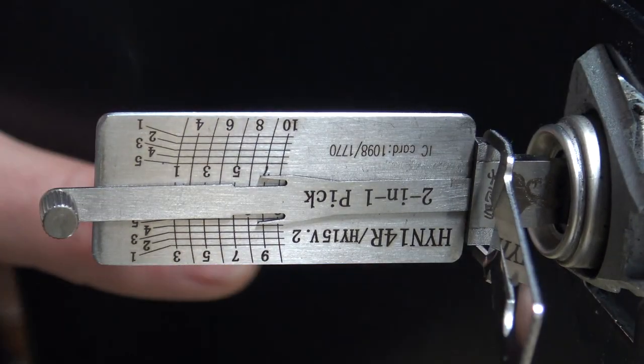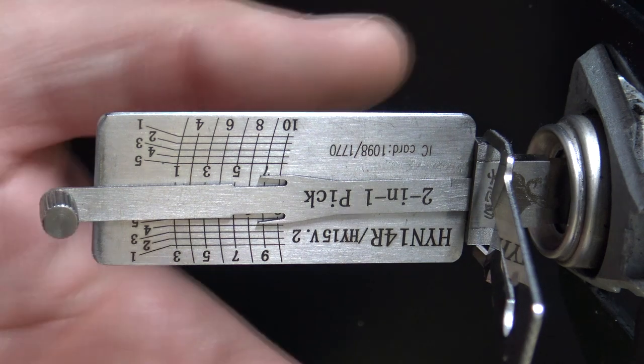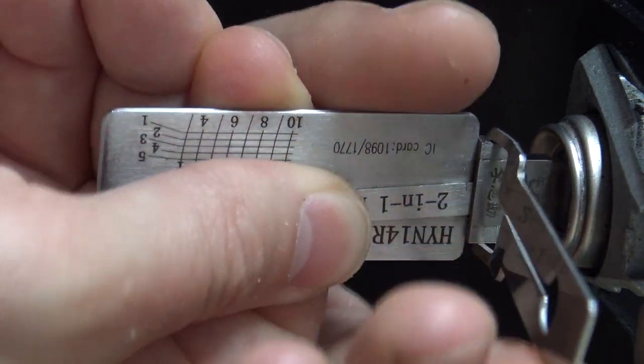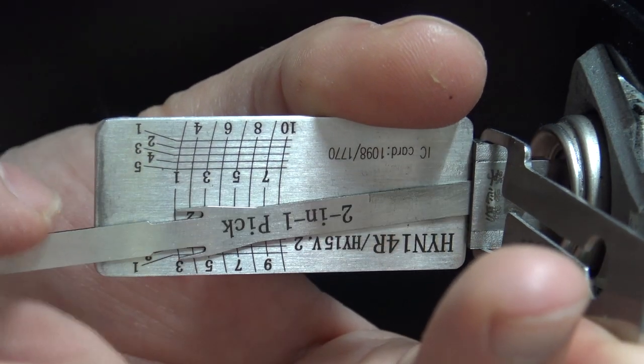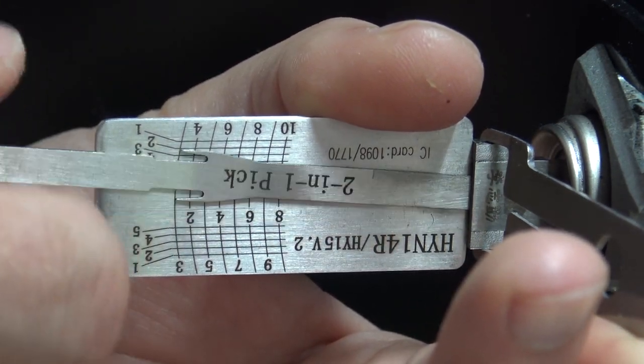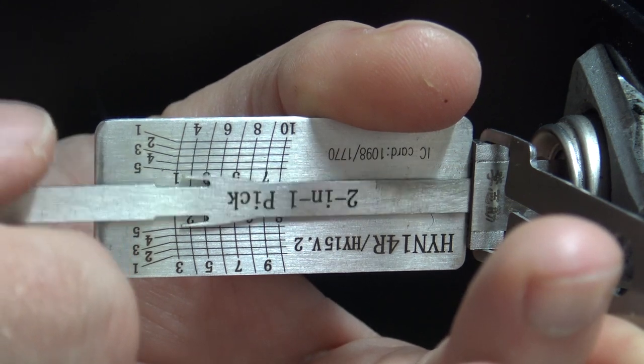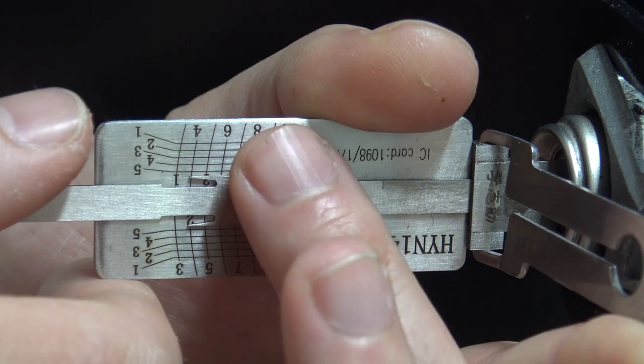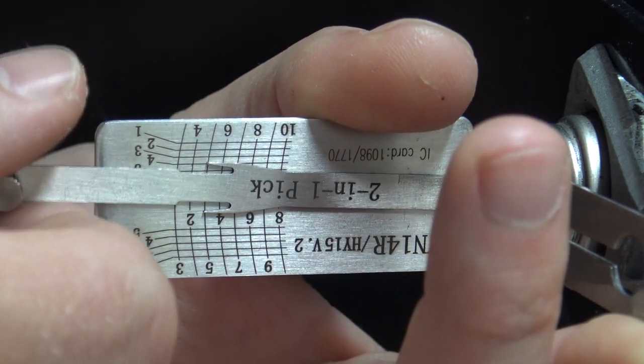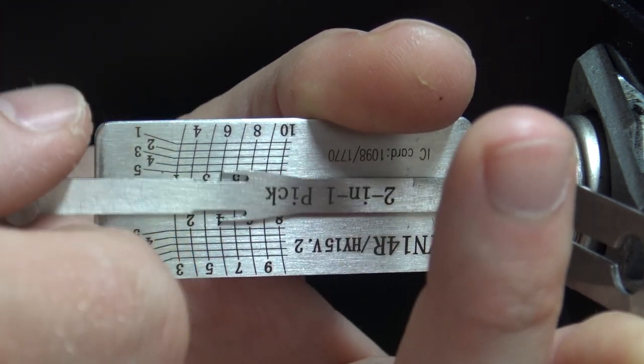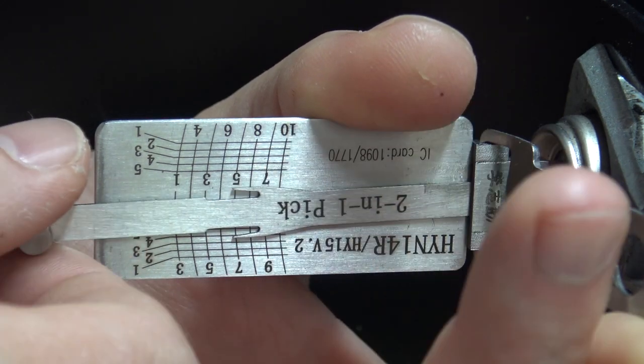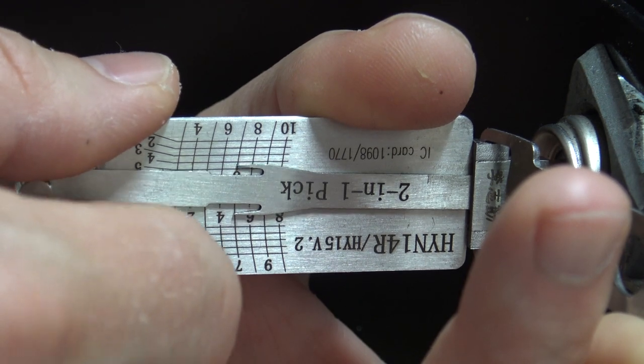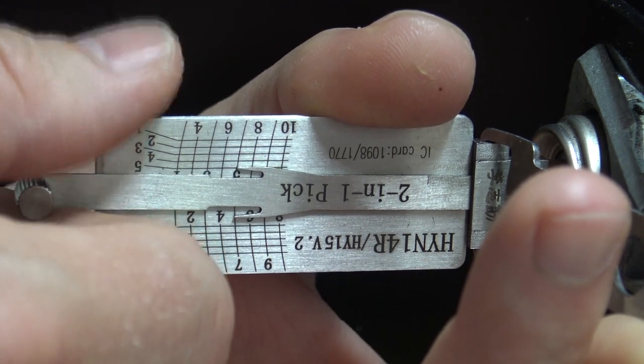Hyundai locks generally pick and decode fairly easily, not too bad. Applying some tension here. Okay, so we got the first one going up and the second one going down. First one's not binding, second one is binding. A little click, click on that, click on the next one. This one is binding here, but it could be